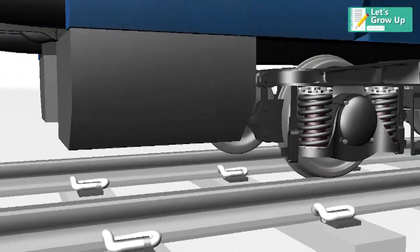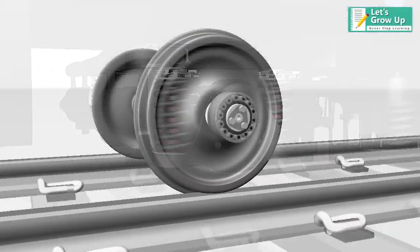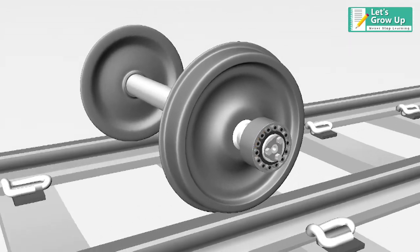The assembly of the axles and wheels is called a wheelset. In this video, we will learn about the wheelset assembly.